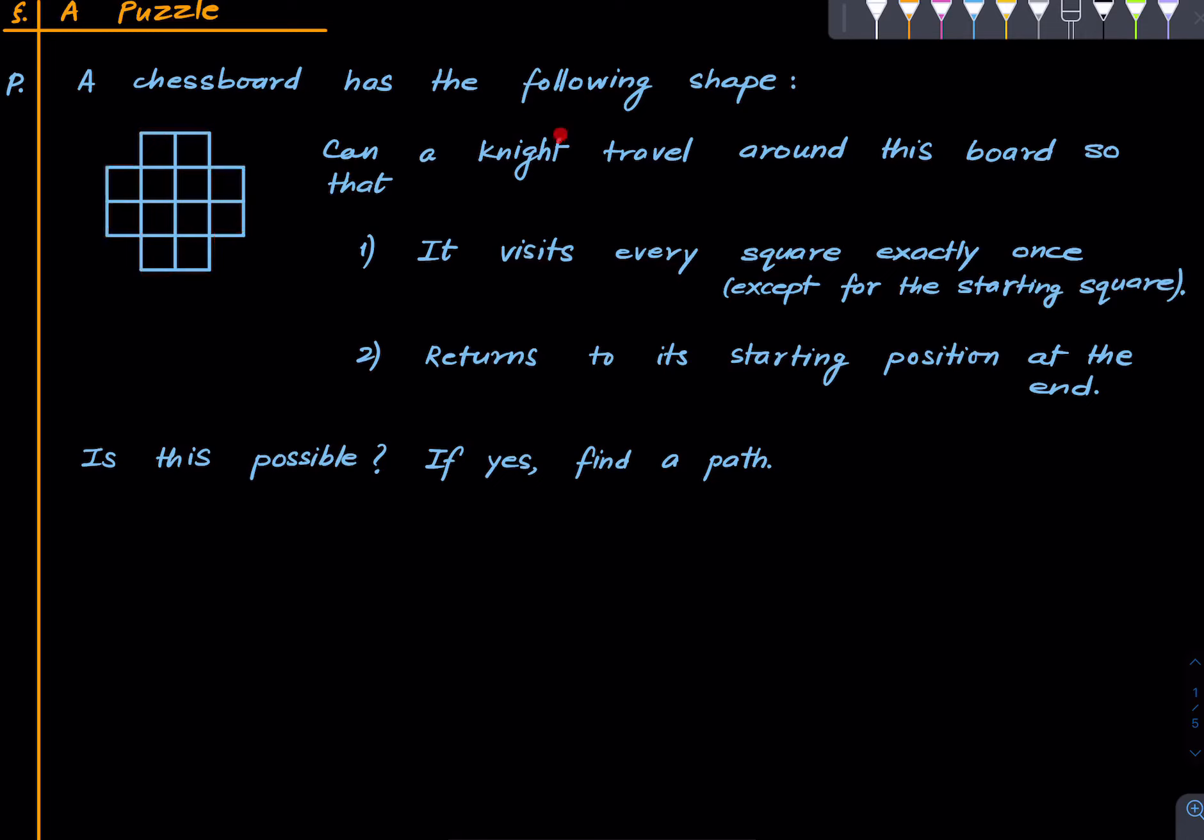You have a knight which one asks to travel from some starting square. It has to travel so that it visits every square exactly once except for the starting square where it is required to come back to. And obviously the knight is required to make only knight moves.